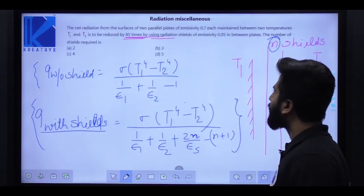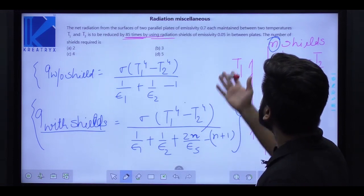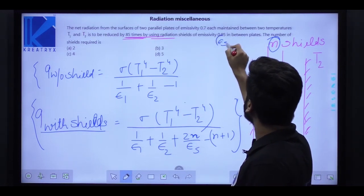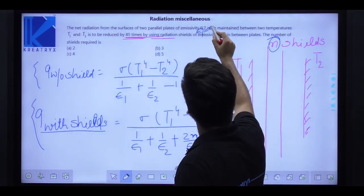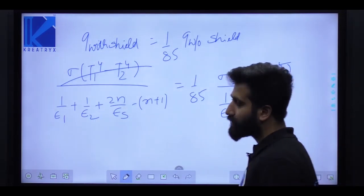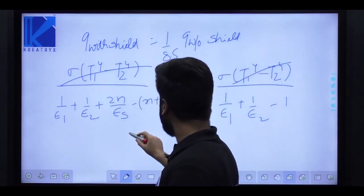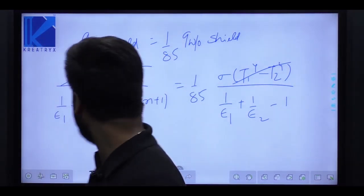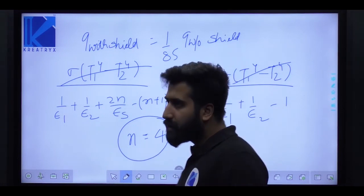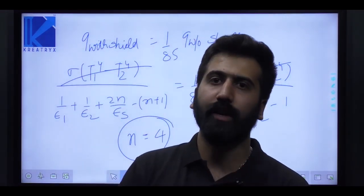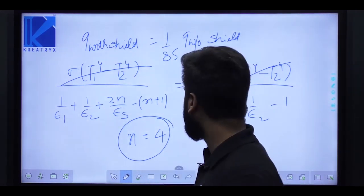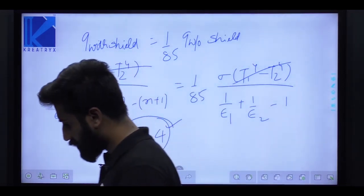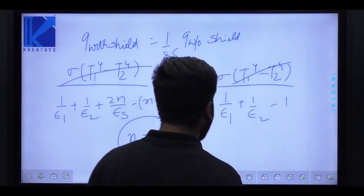Putting in epsilon1 = epsilon2 = 0.7 and epsilon_s = 0.05, solving gives n ≈ 3.8 or so. Since n must be a whole number, round up to n = 4. Therefore the number of shields required is 4.